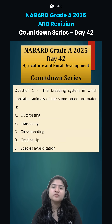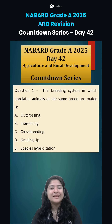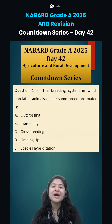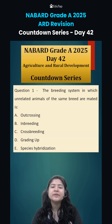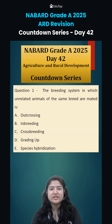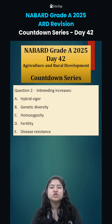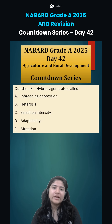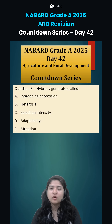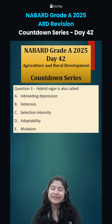Now for today's homework, question number 1: the breeding system in which unrelated animals of the same breed are mated is known as what? Question number 2: in-breeding increases what? And question number 3: hybrid vigor is also called as? Comment down the answers and we will discuss them in the next class. Thank you.